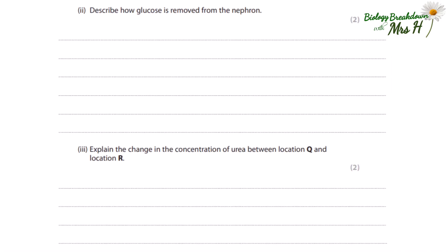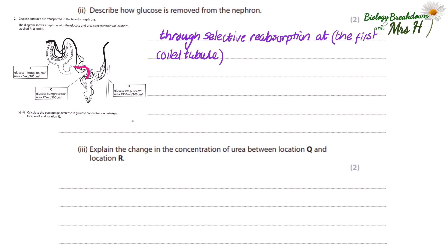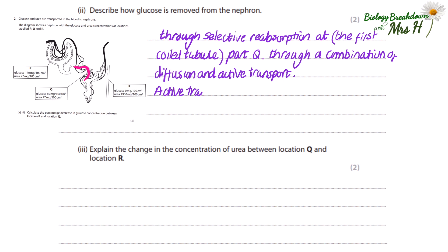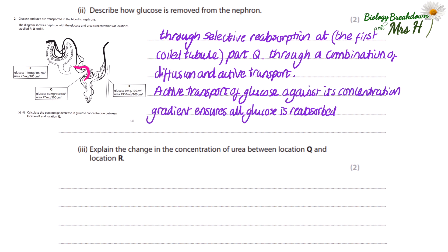Describe how glucose is removed from the nephron. This process of reabsorbing glucose from the nephron back into the blood is called selective reabsorption. It happens at the first coiled tubule, labelled Q on the diagram. Glucose is reabsorbed by a combination of diffusion and active transport. It is active transport that ultimately ensures all glucose is removed from the nephron and reabsorbed into the blood against its concentration gradient. You might also add that active transport requires energy.